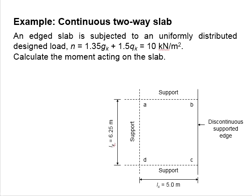Let us try an example on the continuous two-way slab. The figure shows an edge slab which is subjected to a uniformly distributed design load of 10 kN per meter square. The question asks us to calculate the moment acting on the slab.